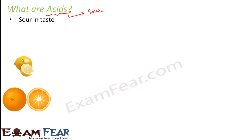Let us take some examples which we have already tasted. Like lemons and oranges — we all could have tasted them and we know that they are sour in taste. They are acidic because they contain an acid called citric acid.